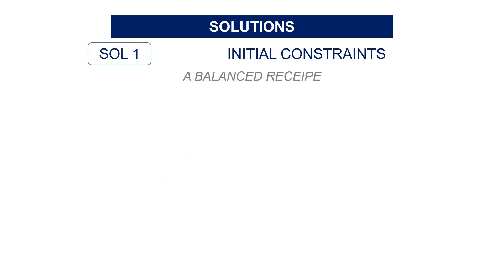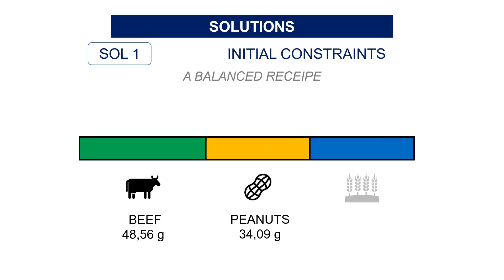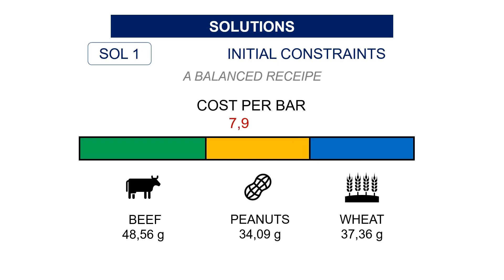Let's have a look at the results. Starting with the initial set of constraints, your recipe is quite balanced between three ingredients. A large part of the beef brings enough protein but also drives up the cost. The rest is nearly equally shared between wheat and peanuts. Your bar will cost $7.91, which is a bit too high considering the competitive market of meal bars. Let's try to find another solution.